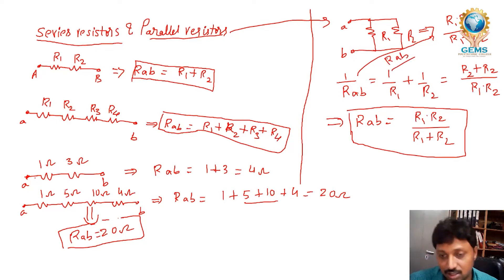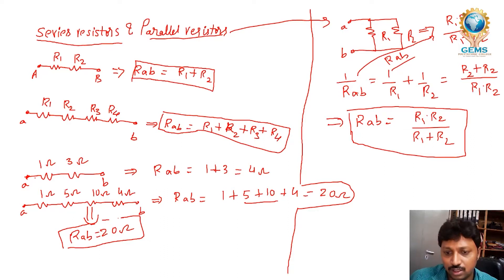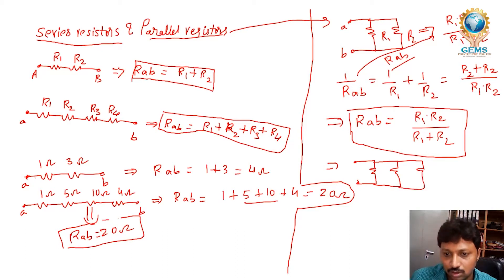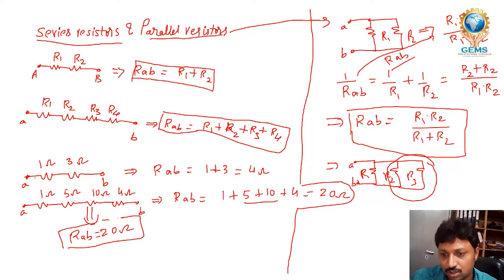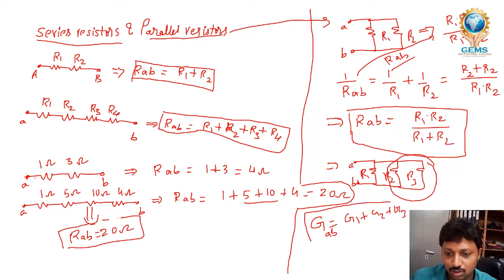Suppose three resistors are connected in parallel. That is also very easy to find using the same method — with R1, R2, and R3. First find the equivalent of two resistances, then that combined resistance with the third. You can also find them step by step.